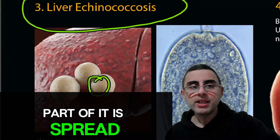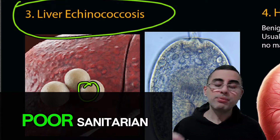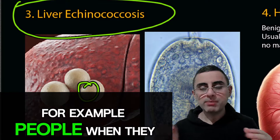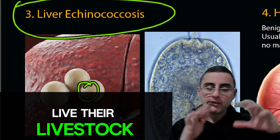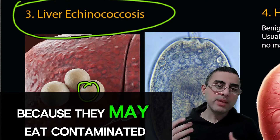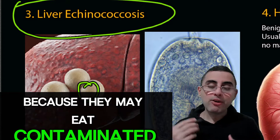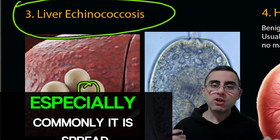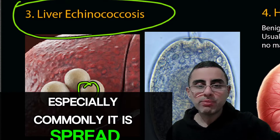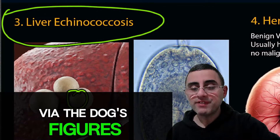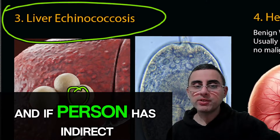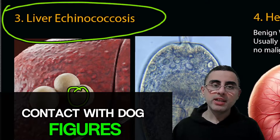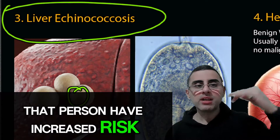This parasite spreads through poor sanitation. For example, people who live near livestock may eat contaminated food or water. It is especially commonly spread via dog feces, and a person who has indirect contact with dog feces has an increased risk of liver echinococcus.